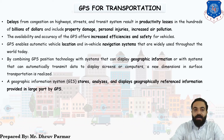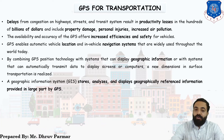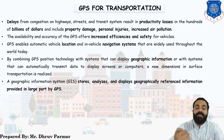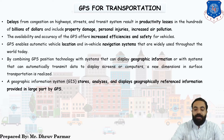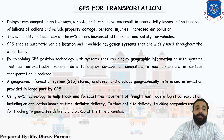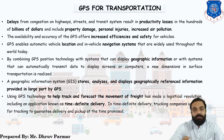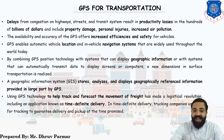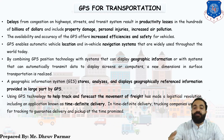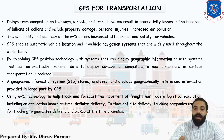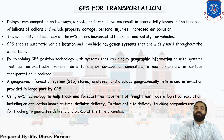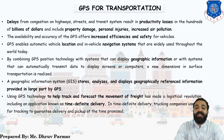GPS stores, analyzes, and displays geographic reference information data. By GPS we can easily track and forecast the movement of freight — freight means goods. This represents an industrial revolution, which can be called the logistical revolution.